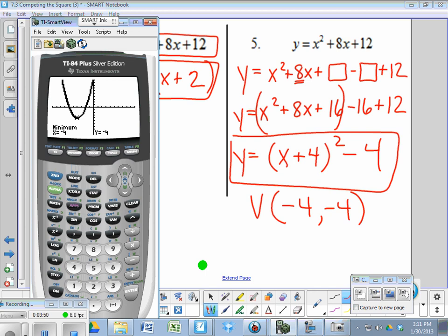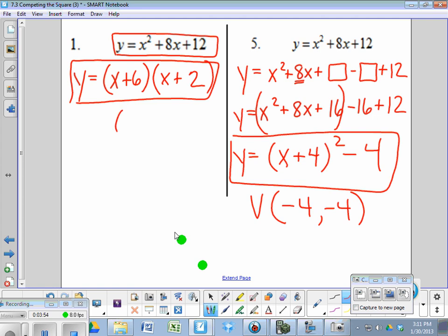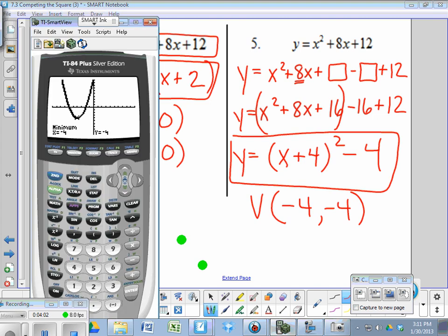Another thing we can do on the calculator is to confirm the two zeros, which should be negative 6, 0, and negative 2, 0. We can confirm these by tracing. Press trace, negative 6, enter. It confirms that it's 0. And then hit negative 2, enter, and it confirms that it's a 0.